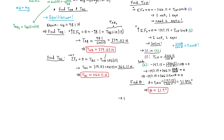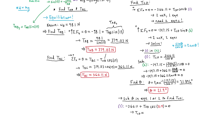Now that we know theta, we can solve for TCD by substituting back into equation one. This gives negative 366.11 plus TCD times cosine of 21.9 degrees equals zero. Solving, TCD equals 366.11 divided by cosine of 21.9 degrees, which is approximately 394.57 newtons. Hence the tension in cable CD is equal to 394.57 newtons.